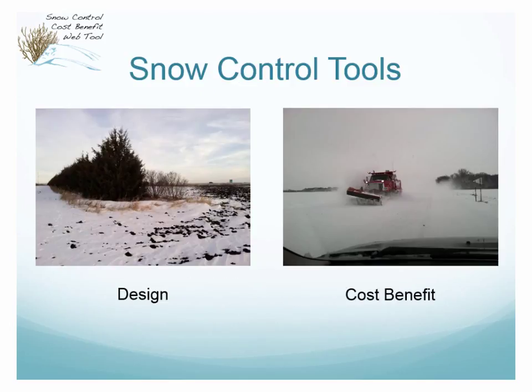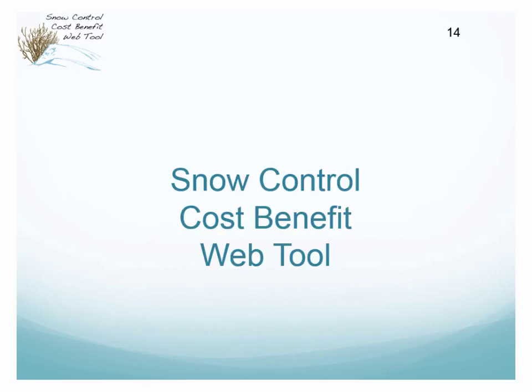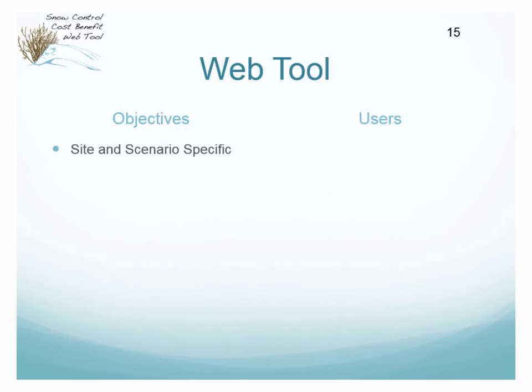We have two tools. There was a tool already built for designing living snow fences — that tool takes climatology information to better understand what heights you need for these snow fences and how far the setback should be. As part of this research project, we built a cost-benefit tool. We had a Microsoft Excel-based tool and we brought it to the web. So we wanted this web tool to have site- and scenario-specific analysis and conduct a full cost-benefit analysis.